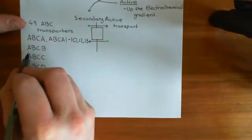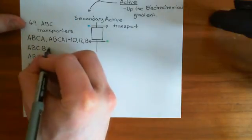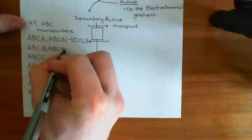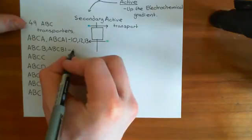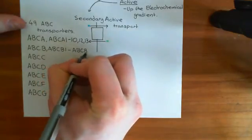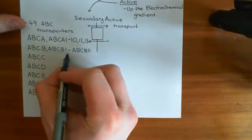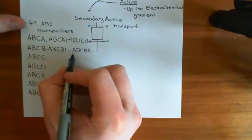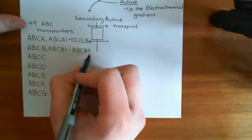The ABCB family is perfect — you have ABCB1 all the way up to ABCB11 without a single blip: ABCB1, ABCB2, ABCB3, ABCB4, ABCB5, all the way up to ABCB11.